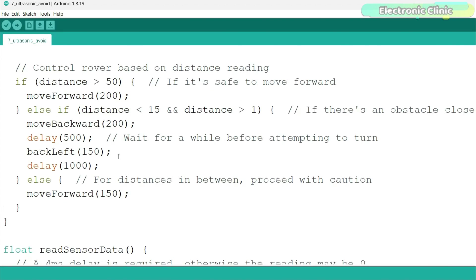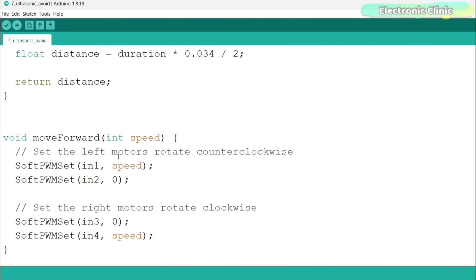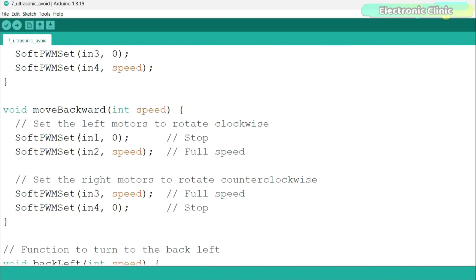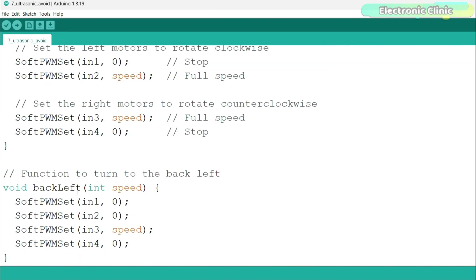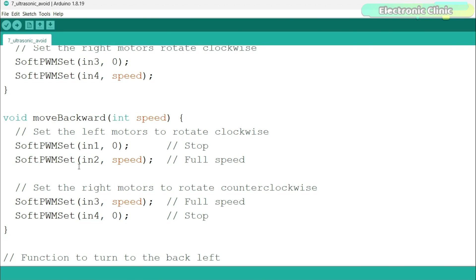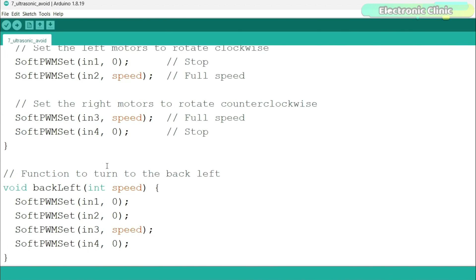Move forward, move backward, and turn left. These are user-defined functions used for controlling the motors. I have already explained all these functions in lesson number 1. I have talked in much detail about how to control the speed and direction of motors. Let's upload this program.